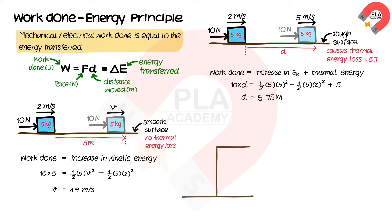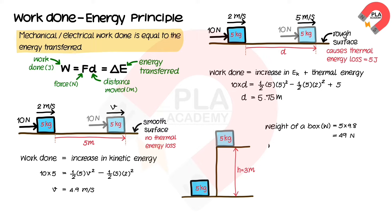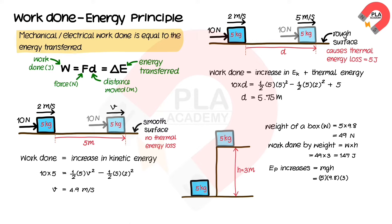In another scenario, a box with a mass of 5 kg is lifted from the ground to a height of 3 meters. The weight of the box is 5 × 9.8 = 49 Newtons. The work done by the weight of the box is 49 × 3 = 147 Joules. The gravitational potential energy increases by mgh = 5 × 9.8 × 3 = 147 Joules. Therefore, the work done equals the increase in gravitational potential energy.